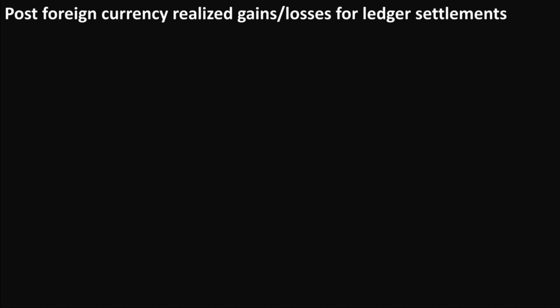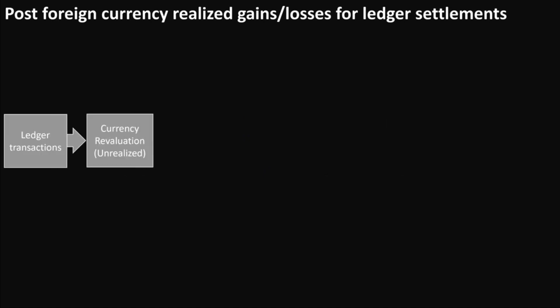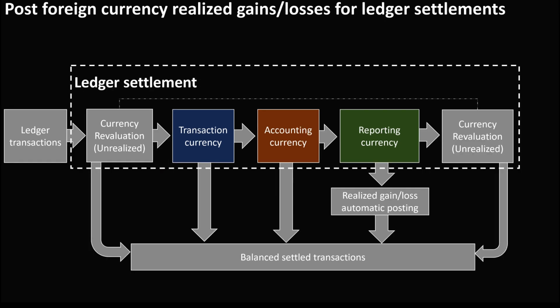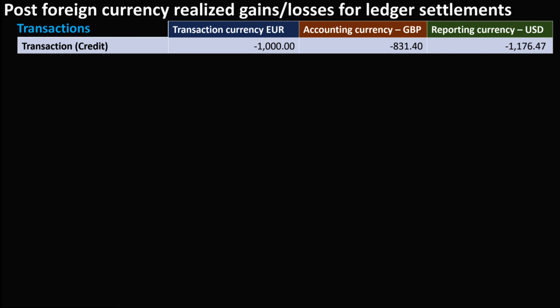In the same context, assuming we have a currency revaluation resulting in an unrealized gain or loss before settling a transaction, the procedure involves settling the debit and credit first. Subsequently, a currency revaluation is executed to generate an unrealized gain or loss transaction, effectively eliminating the prior unrealized balance.